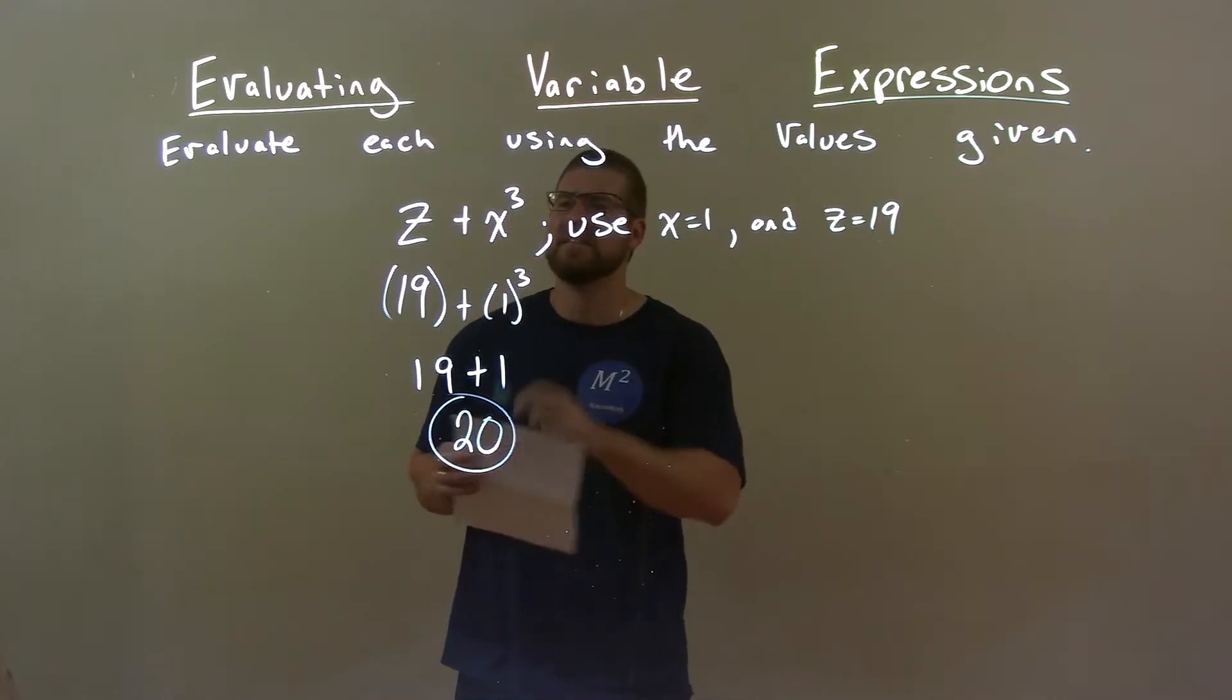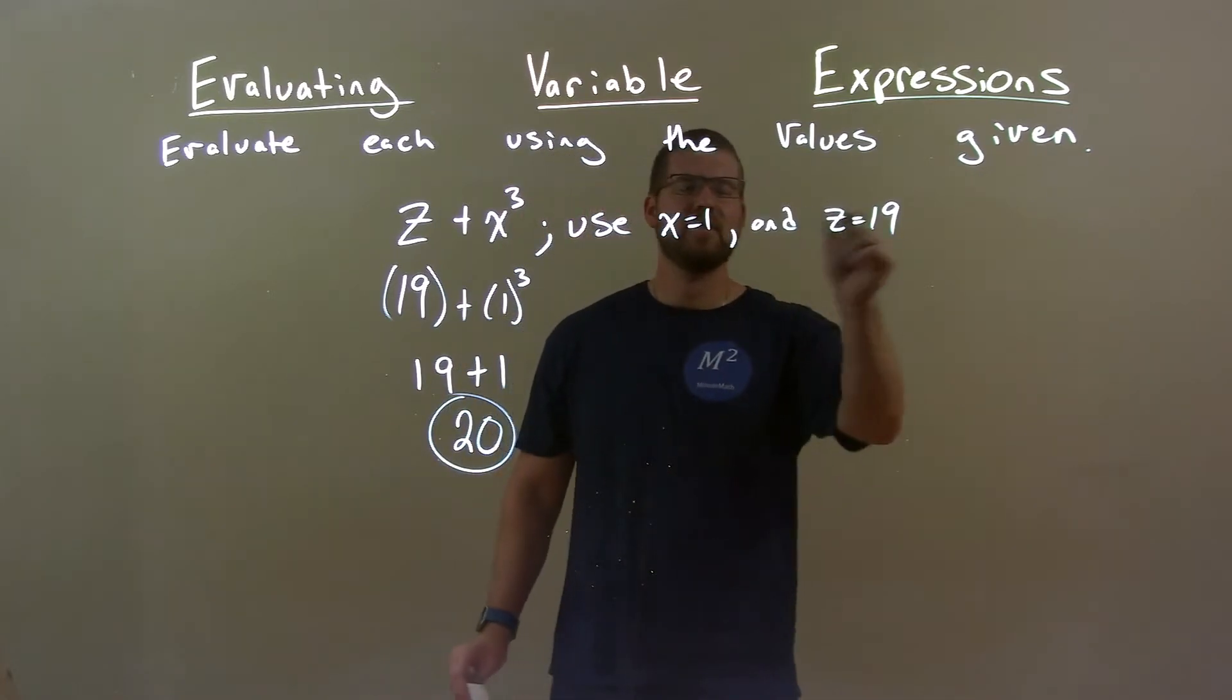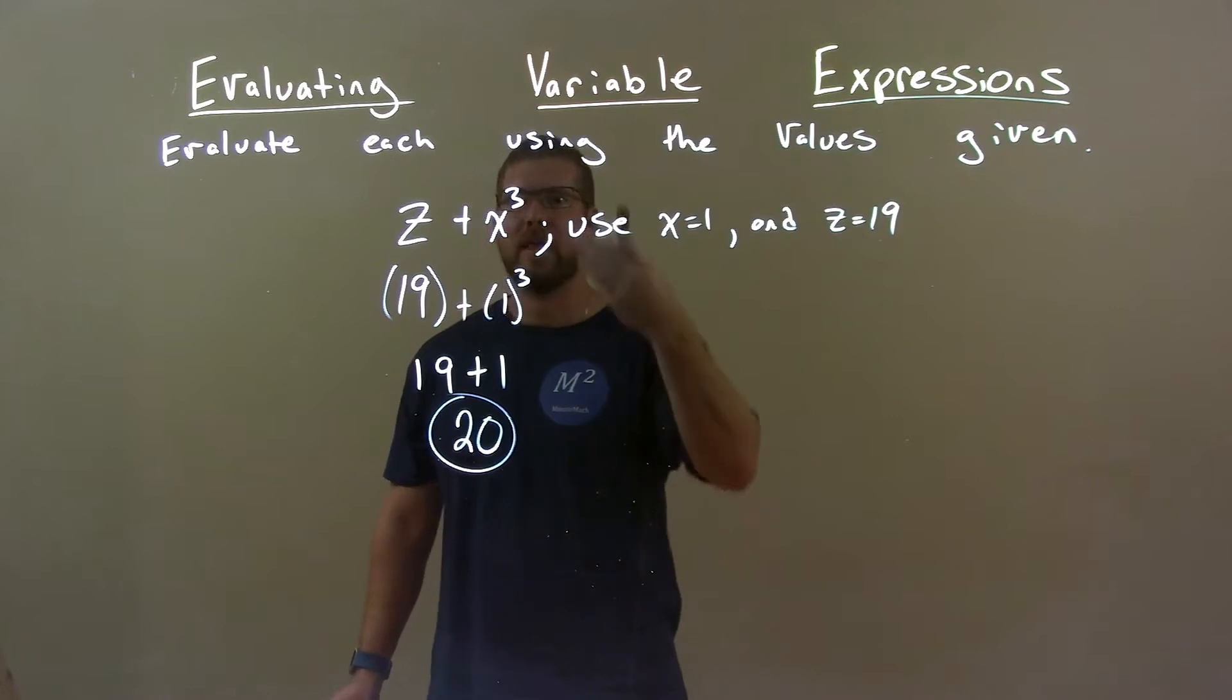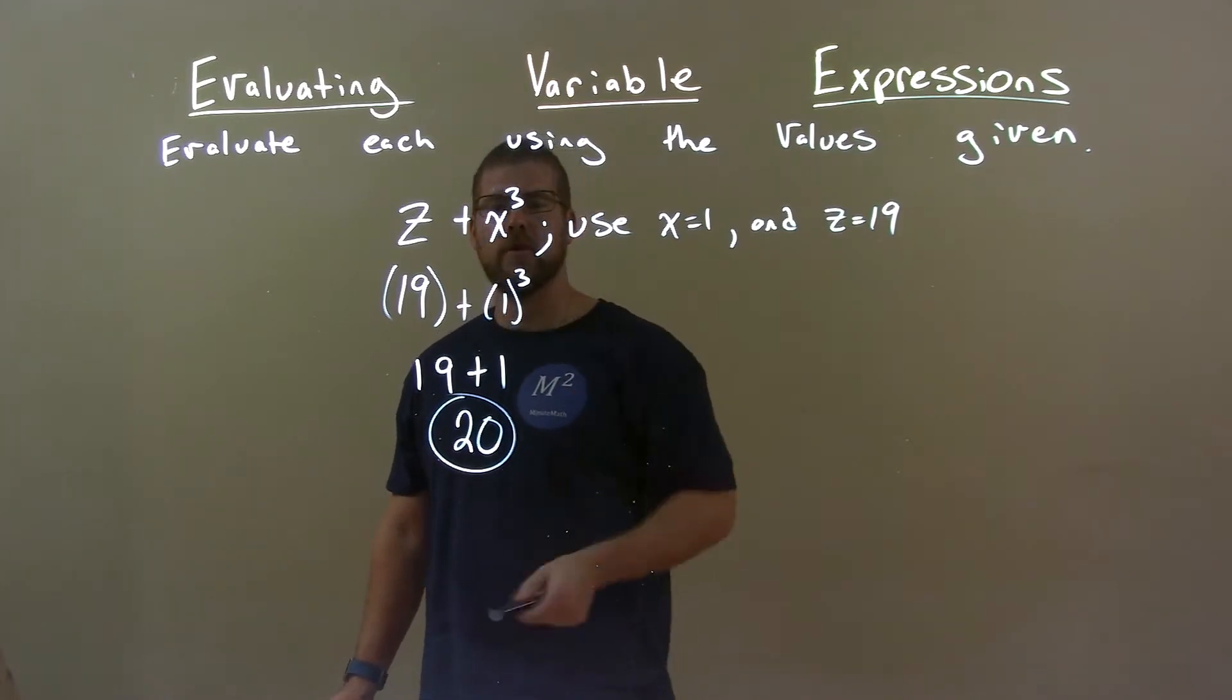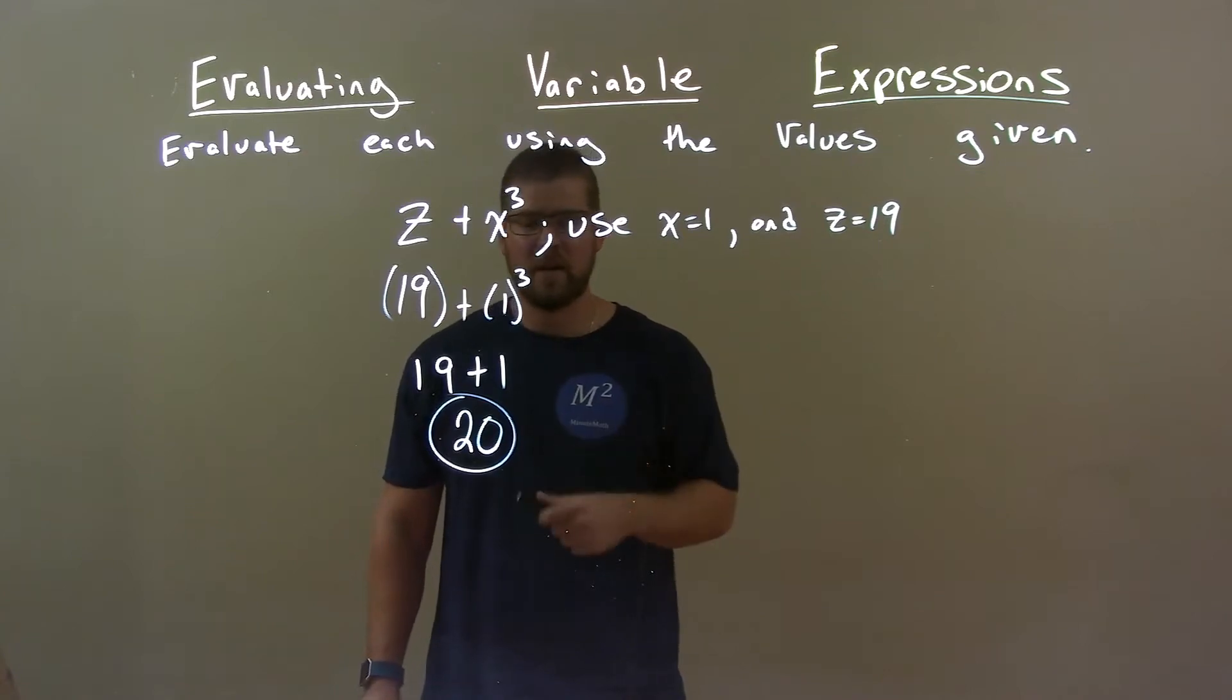Quick recap. We're given z plus x to the third, and we're going to use x equals 1 and z equals 19. 19 for z, 1 for x, then we simplify. 1 to the third power is 1. 19 plus 1 is 20. So again, final answer is 20.